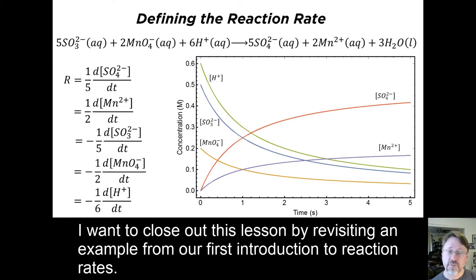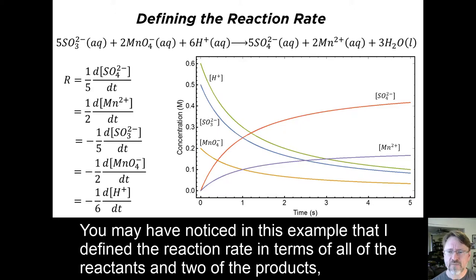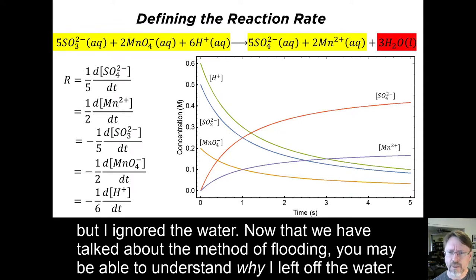I want to close out this lesson by revisiting an example from our first introduction to reaction rates. You may have noticed in this example that I defined the reaction rate in terms of all of the reactants and two of the products, but I ignored the water. Now that we've talked about the method of flooding, you may be able to understand why I left off the water.